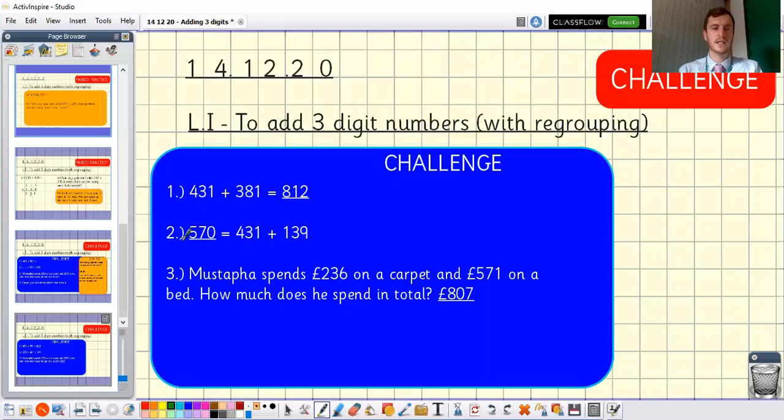Next one 570 is the answer to 431 plus 139. For this one it was our ones that was the tricky one. 1 one plus 9 ones equals 10 ones and we know that 10 ones make 1 ten which is why there are 0 ones here. We've created an extra ten in our tens column.